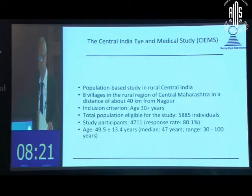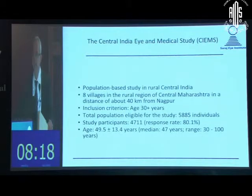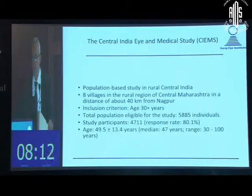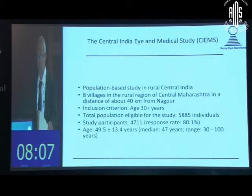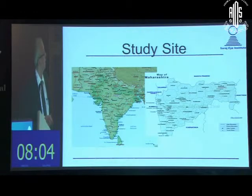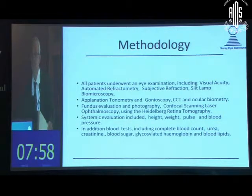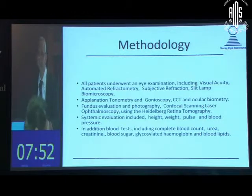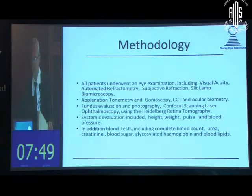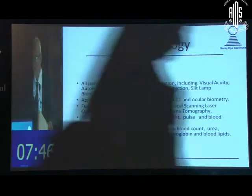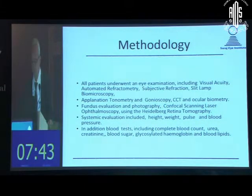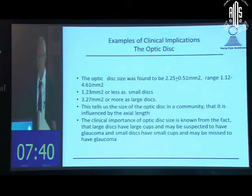The Central India Eye and Medical Study was a population-based study conducted in rural central India. The total population studied was 4,711 subjects with a mean age of 49.5 years — Nagpur is right in the center of India. All patients underwent a detailed eye evaluation including fundus photography and Heidelberg retina tomography, and systemic blood parameters were tested including glycosylated hemoglobin, blood sugar, urea, creatinine, and blood lipids.